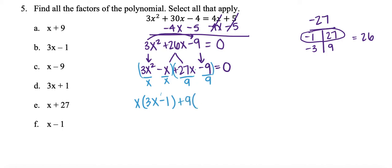GCF goes out in front. 27x divided by 9 is 3x. Negative 9 divided by 9 is minus 1. And then I just put my GCF goes out in front, so I have x plus 9, 3x minus 1 is equal to 0. Now this question is asking us to find the factors of a polynomial. Well what we just did is we factored it. So I'm just looking to see which ones have those two factors and that's going to be a and b.